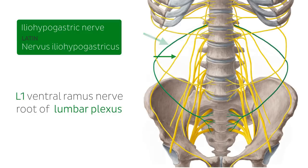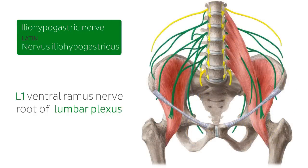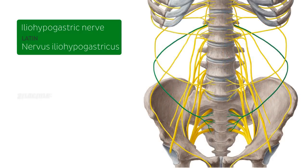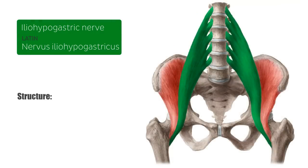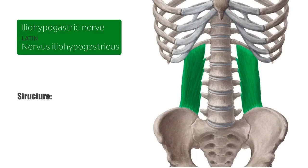The lumbar plexus is formed by the spinal nerves L1 to L4. We can see each of these roots — L1, L2, L3, and L4 — and the plexus lies posterior to the psoas major muscle. After branching from the common trunk, the iliohypogastric nerve emerges from the upper lateral border of the psoas major muscle and courses obliquely in front of the quadratus lumborum muscle, posterior to the kidneys.